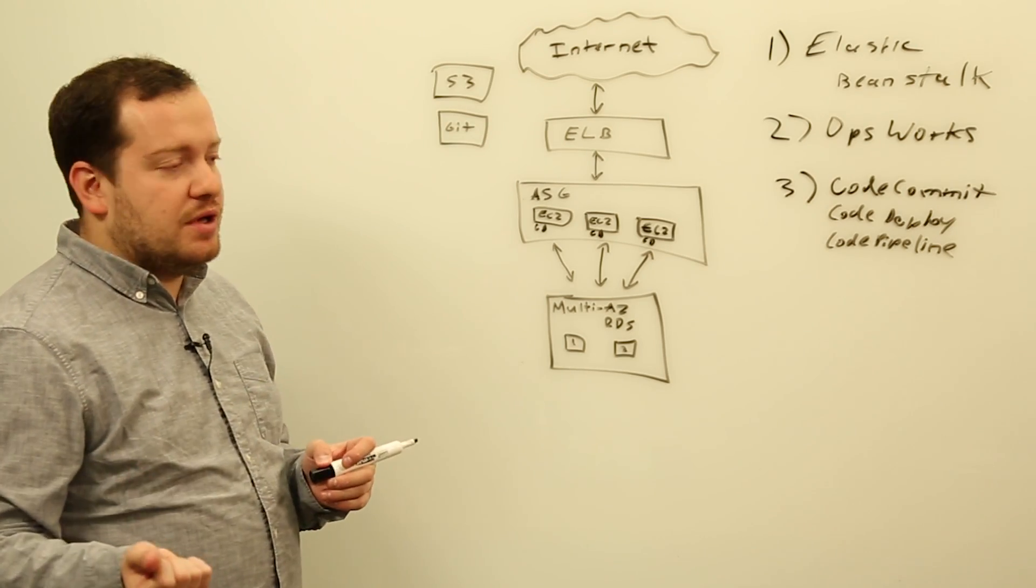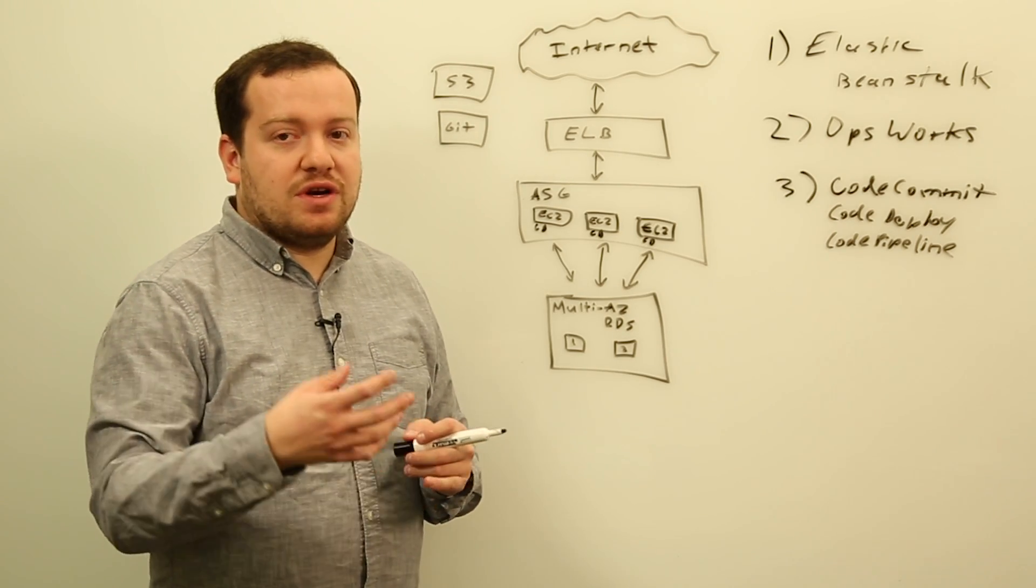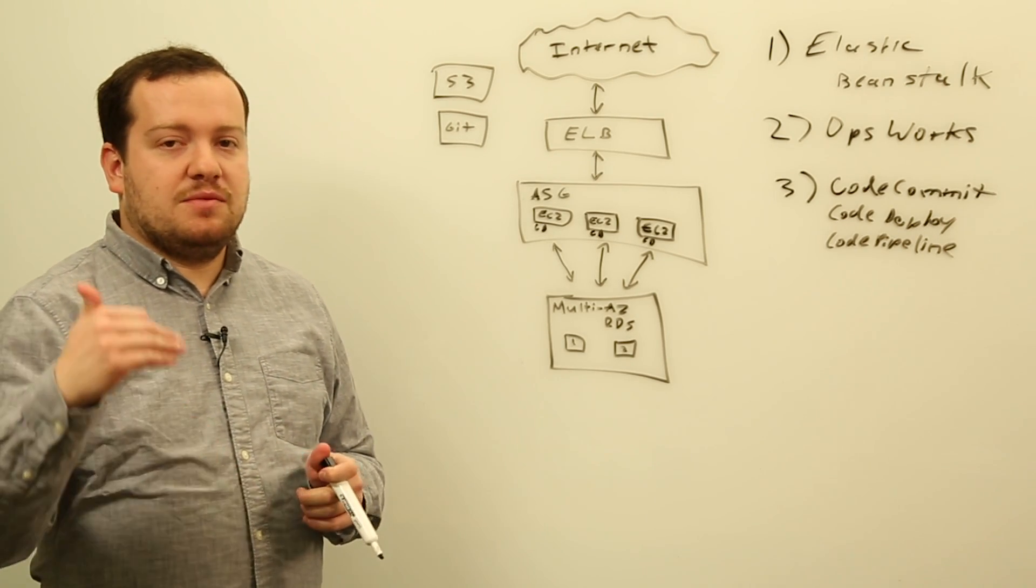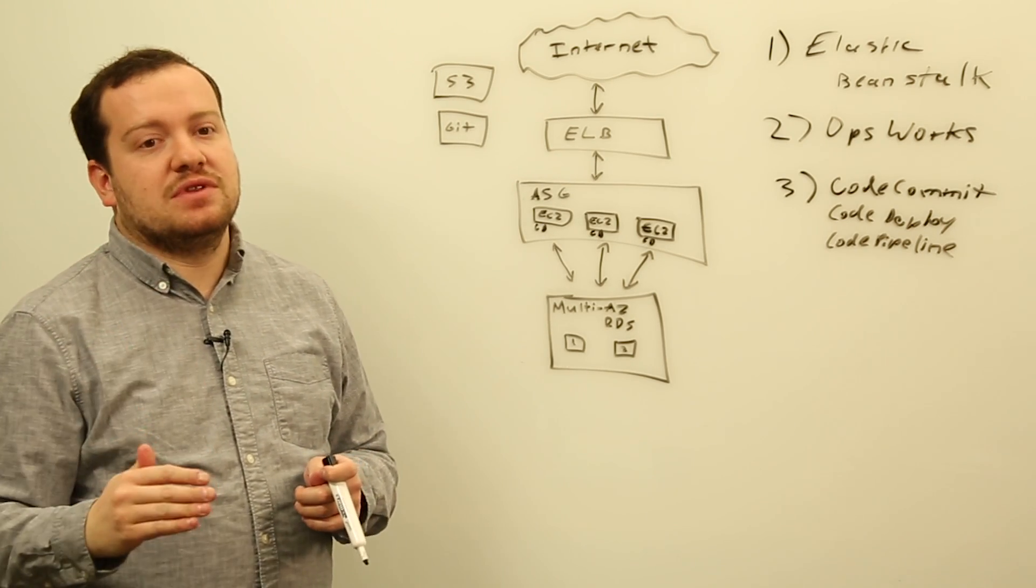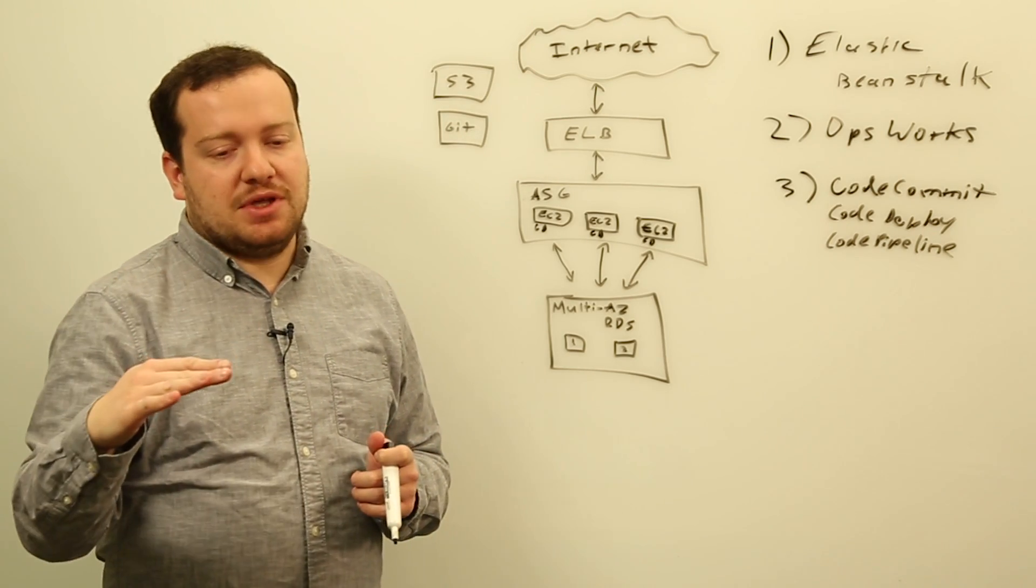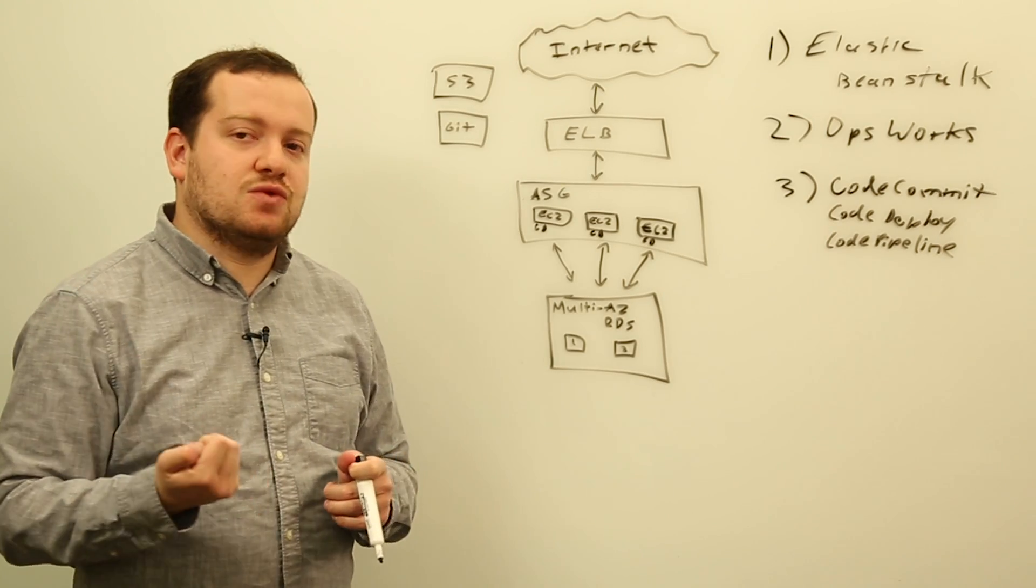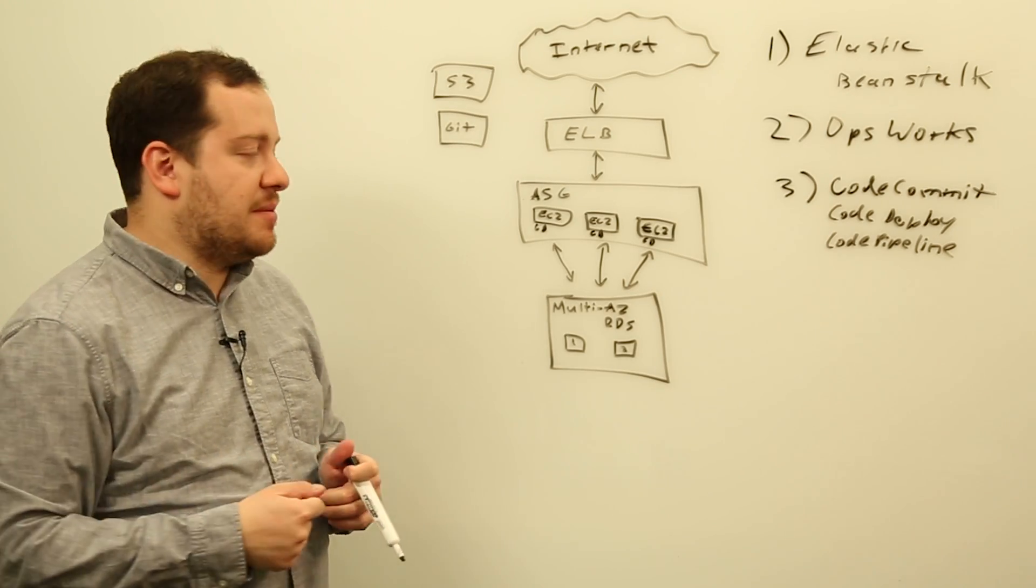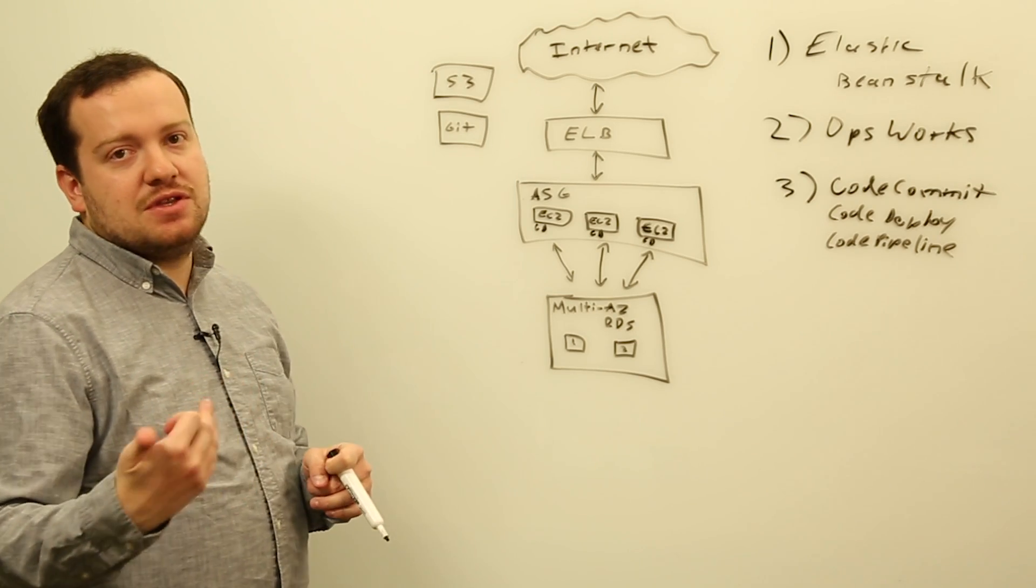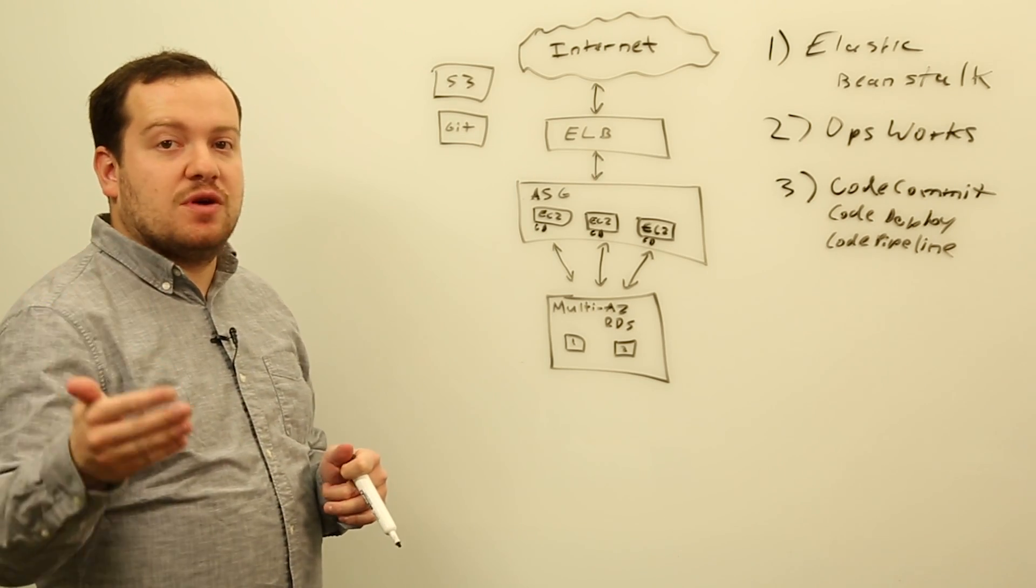Then there's CodeDeploy. So CodeDeploy is our code deployment service. CodeDeploy allows you to run an agent on your instances and also on on-premise servers. And it breaks up your deployments into different lifecycle stages. So for example, when your application starts, when your application stops, when you have to validate if the service on the instance is running, when you have to install the actual application, and so on and so forth. And you can define what happens in those lifecycle stages based on custom scripts.